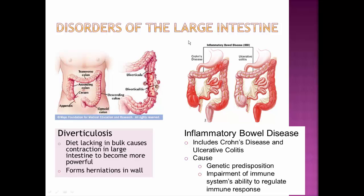You can see these outpocketings in the picture here — they are not polyps in the colon, they are outpocketings pushing outward. They can occur all along the intestine but tend to concentrate in the descending colon. If bacteria and fecal material get trapped inside those little diverticula, they can become inflamed — that inflammation is called diverticulitis. 'Itis' always refers to inflammation. This is why you need a bulky, high-fiber diet, because it's easier for the intestines to push that material along.